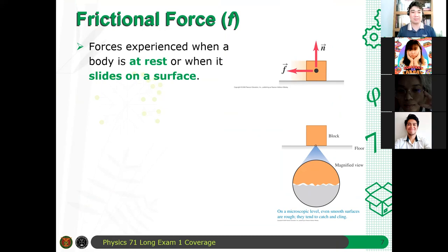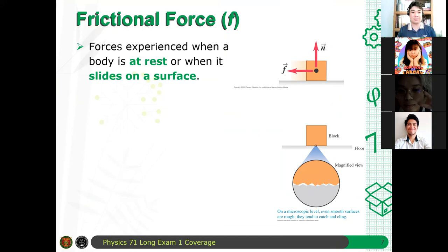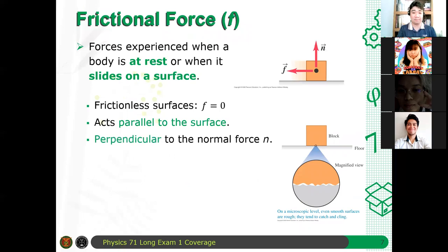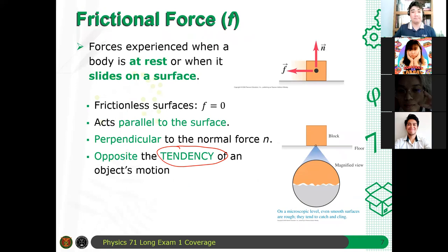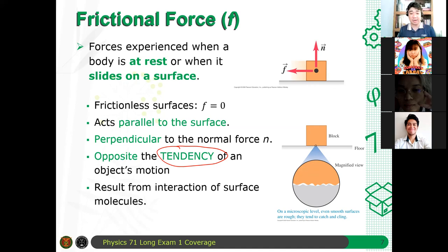Remember this lecture on frictional forces. These are forces experienced when a body is at rest or when it slides on a surface. For a frictionless surface, the frictional force of course vanishes. We know that it acts parallel to the surface, perpendicular to the normal force N. This is where we got confused. It opposes the tendency of the object's motion. I may not have explained that clearly, which made my statements a bit problematic. The frictional force results from the interaction of surface molecules — electromagnetic interaction of forces between two surfaces. It's electromagnetic, not gravitational.